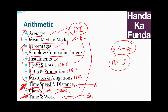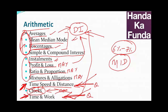On the other hand, profit and loss, ratio and proportion, and mixture and allegation — these are all in the maybe category. Averages, mean, median, mode, and percentages are concepts you need to know so that you can solve the TSD question, the time and work question, and the DI questions. So when you are practicing, first spend some time understanding all these concepts. But when you are looking at mocks and difficult questions, focus primarily on time, speed and distance and time and work. Profit and loss, ratio and proportion, and mixture and allegation are the lesser probable areas, while TSD and time and work are the higher probable areas.